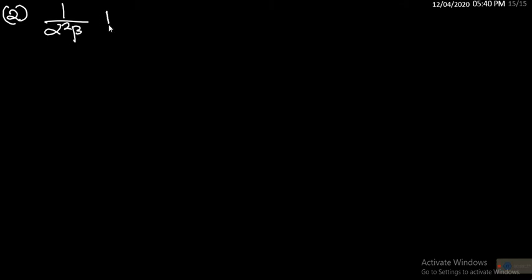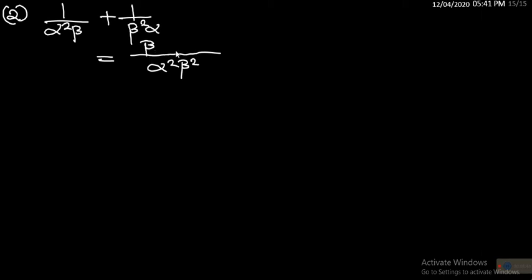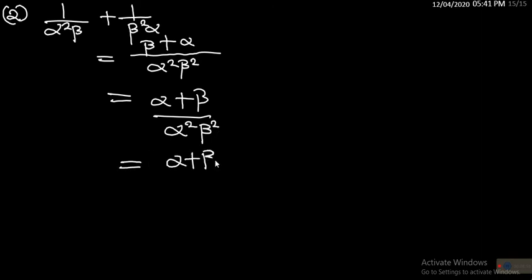Number two: 1/(alpha²·beta) + 1/(beta²·alpha). Taking the lowest common multiple, which is alpha²·beta², we get (beta + alpha) / (alpha²·beta²). This can be written as (alpha + beta) / (alpha·beta)². The expression is now written in terms of alpha + beta and alpha·beta.